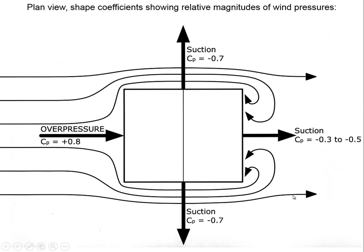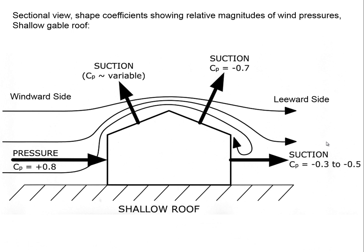This leeward suction is variable because of the turbulence effect — from one second to the next, there can be large variations in what that suction pressure is.